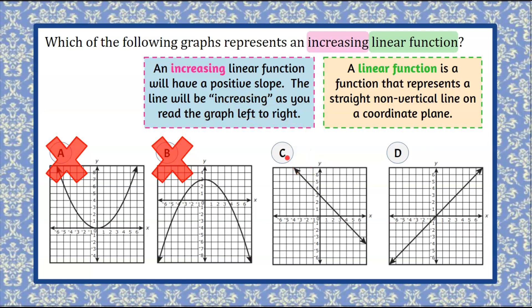So as we look at graph C, we're going to read it left to right. We can see that as we go from the left to the right, our line is sloping down. It will have a negative slope. Therefore, it's what we would describe as a decreasing function. So it cannot be answer choice C.